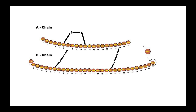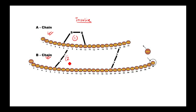As you can see in this image, this is the structure of insulin. It contains chain A and chain B, with the first, second, and third disulfide bonds clearly visible. I hope you have understood the difference between proinsulin and insulin.